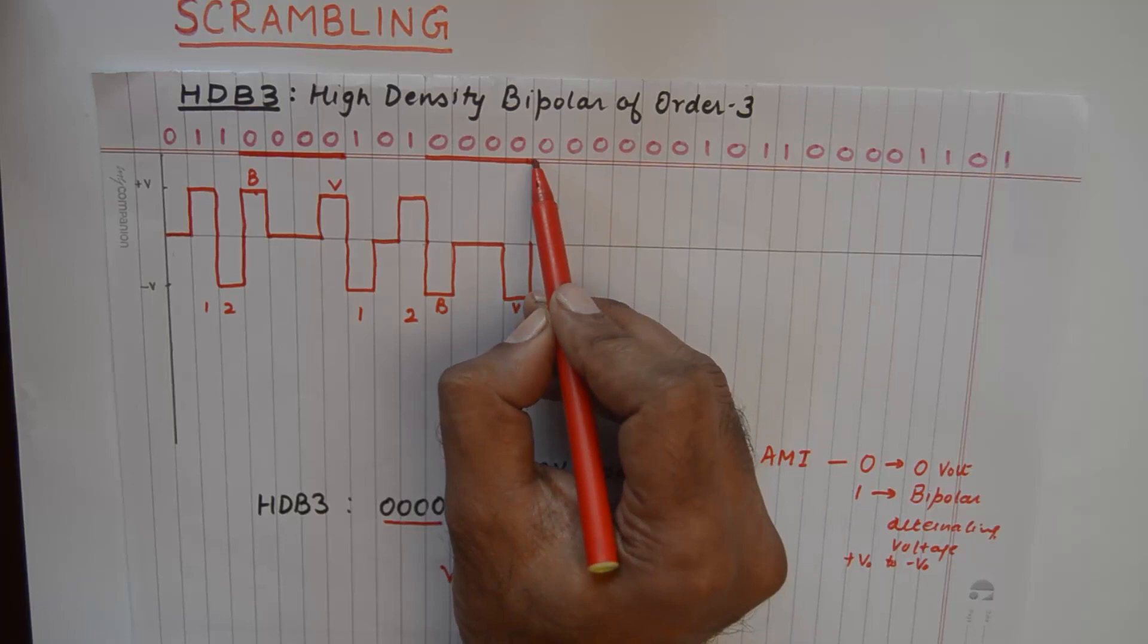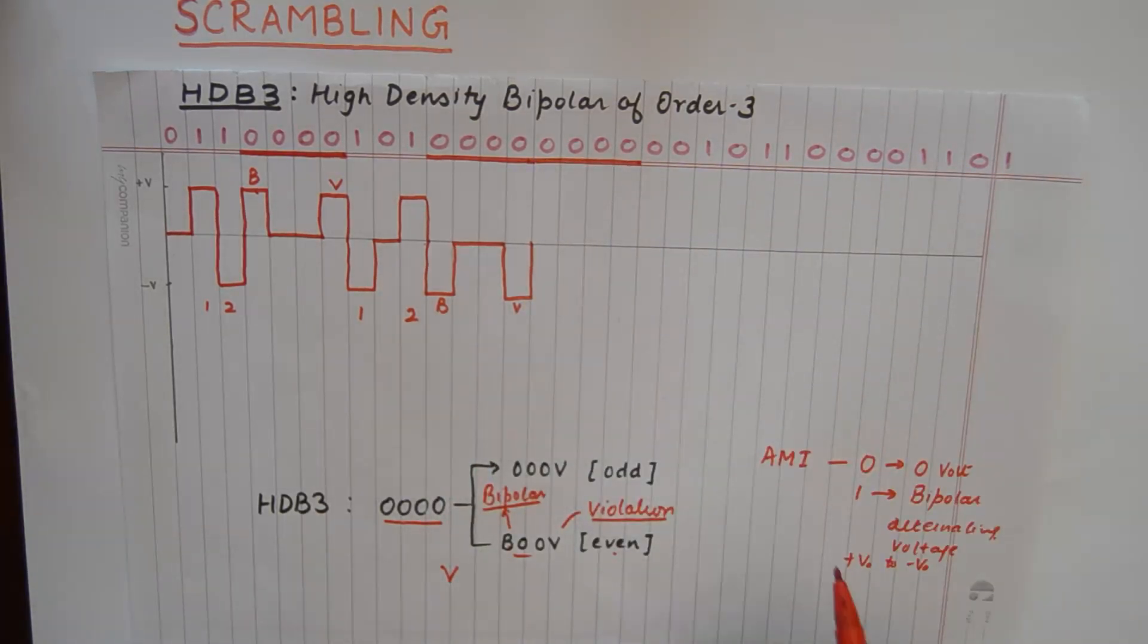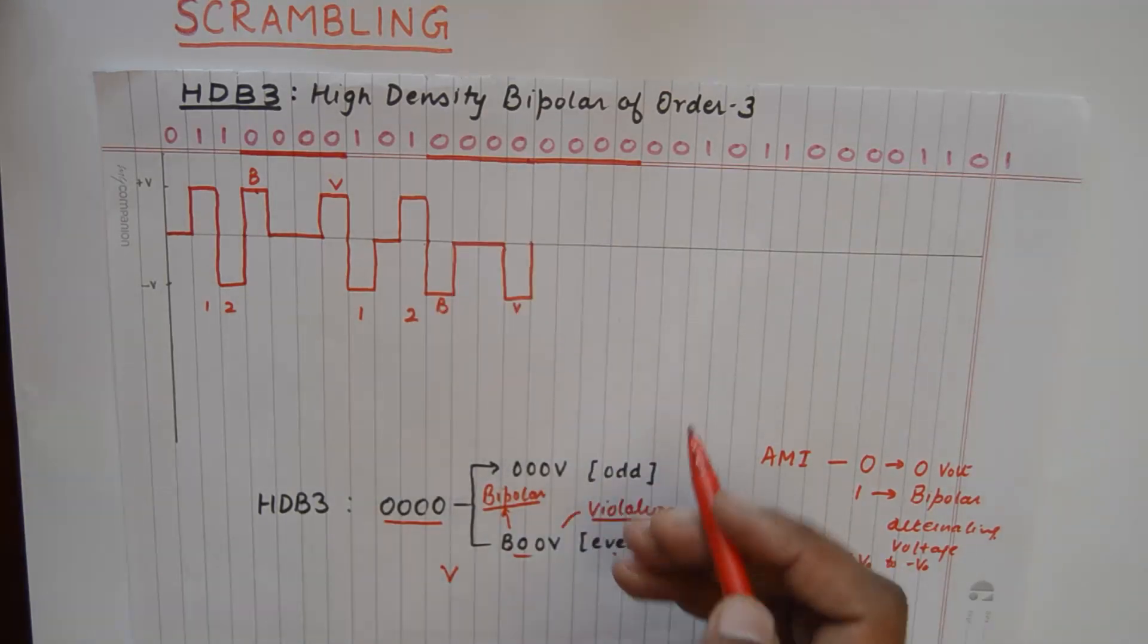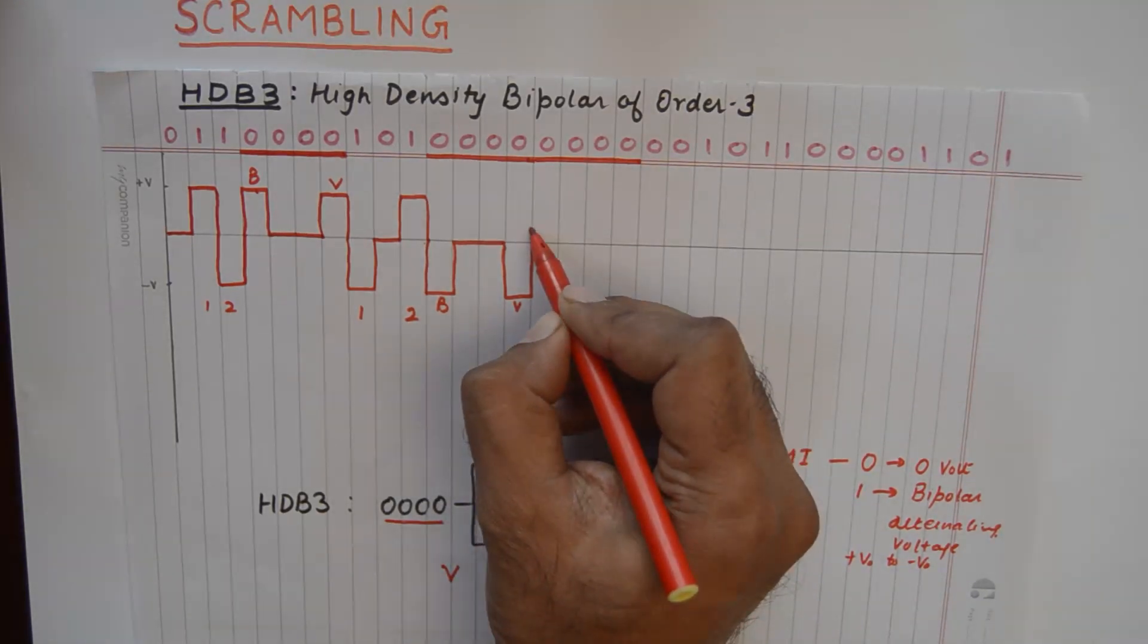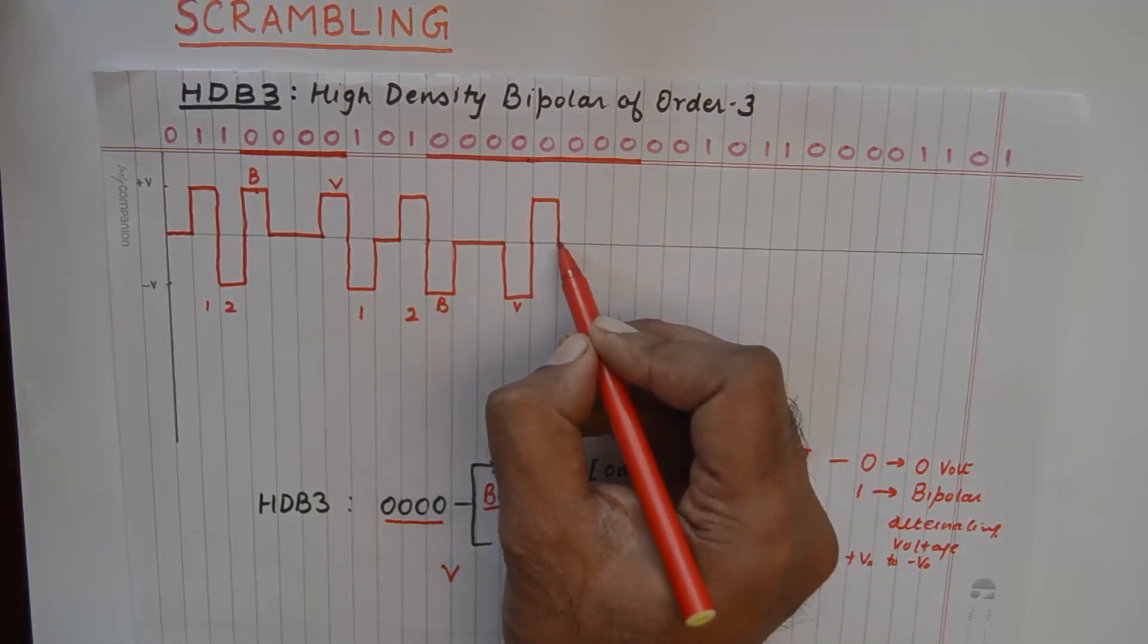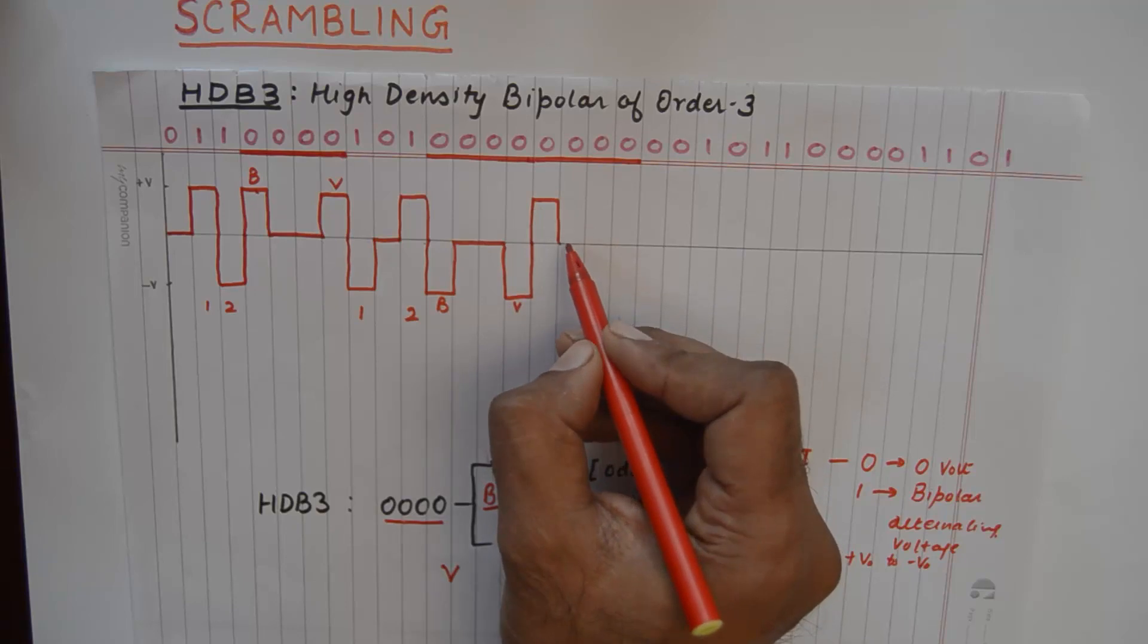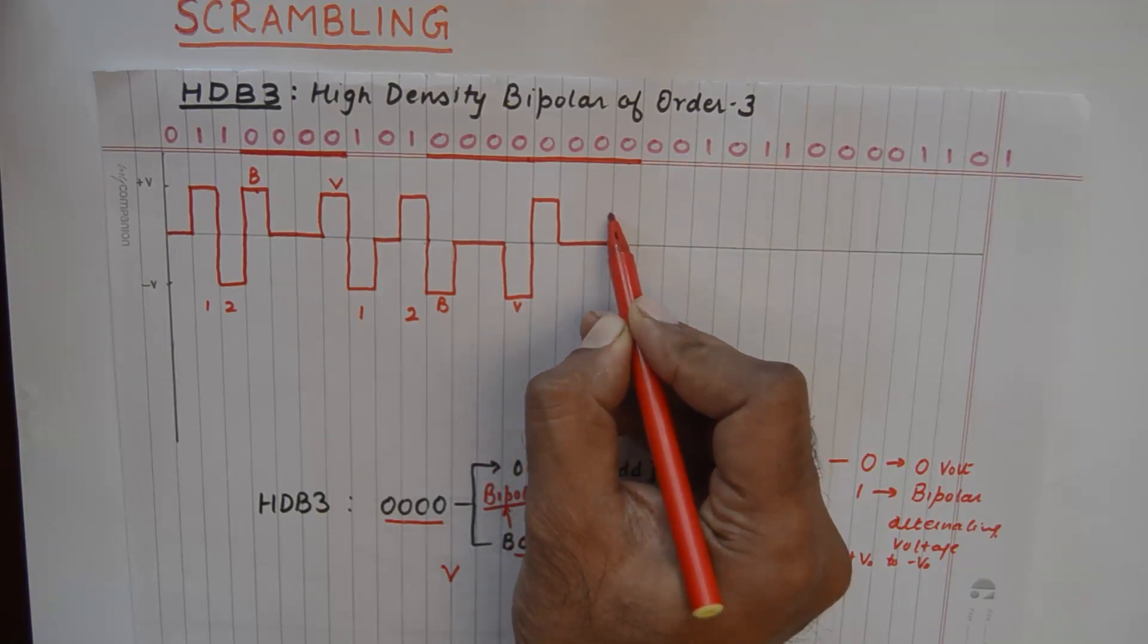Then we need to do it again for these four zeros again because the number of ones is zero. So we are using even case again. So this will go bipolar, inverting its mark, going into positive V. These will go zeros and again a violation.